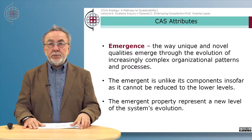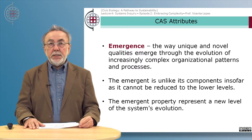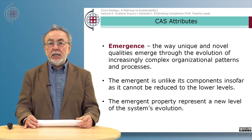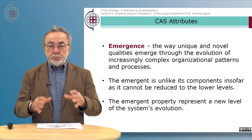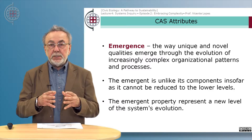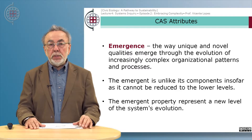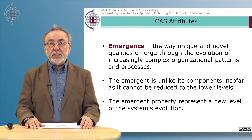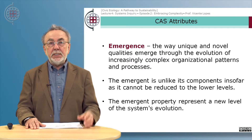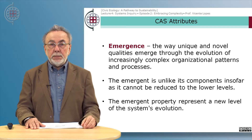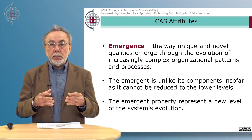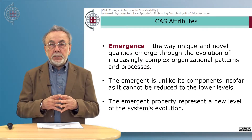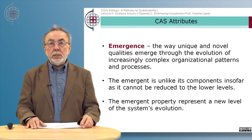Another very important attribute of complex adaptive systems is emergence — the way unique and novel qualities emerge through the evolution of increasingly complex patterns and processes. The emergent property or entity is unlike its components in so far as it cannot be reduced to the lower levels. The emergent property represents a new level of the system's evolution. This explains the saying 'the whole is greater than the sum of its parts,' because as the parts combine and interact, new qualities emerge that cannot be reduced to the parts themselves.